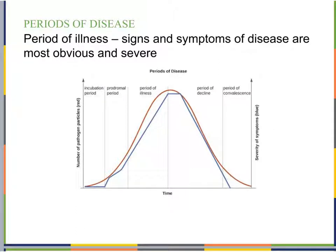The period of illness is when signs and symptoms are most obvious and most severe — when a person would say 'I'm sick' and stay home from work or school. The number of pathogen particles is at its peak, and symptoms are at their worst during this period.